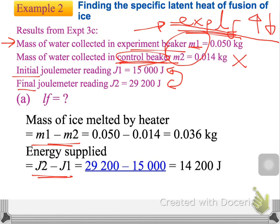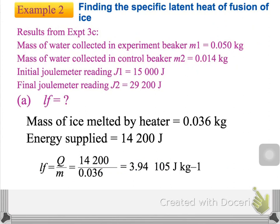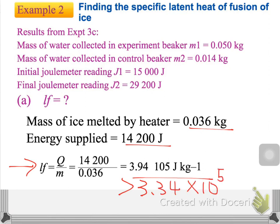Using the initial and final readings and then doing the subtraction, we can find the total amount of energy. Using the data, we can find out Q over M to find the value. Remember that the experimental value is usually higher than the standard value of 3.34 × 10⁵ joules per kilogram. Can you suggest any reason to explain why the experimental value is usually higher than the standard value? Try — you can do it.